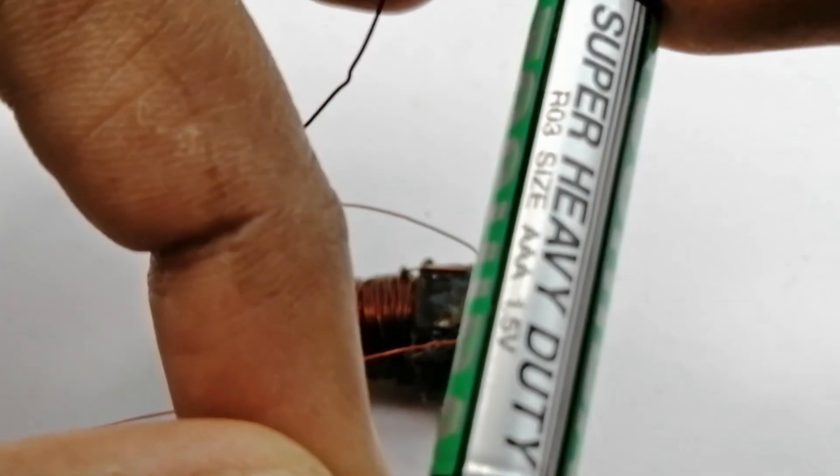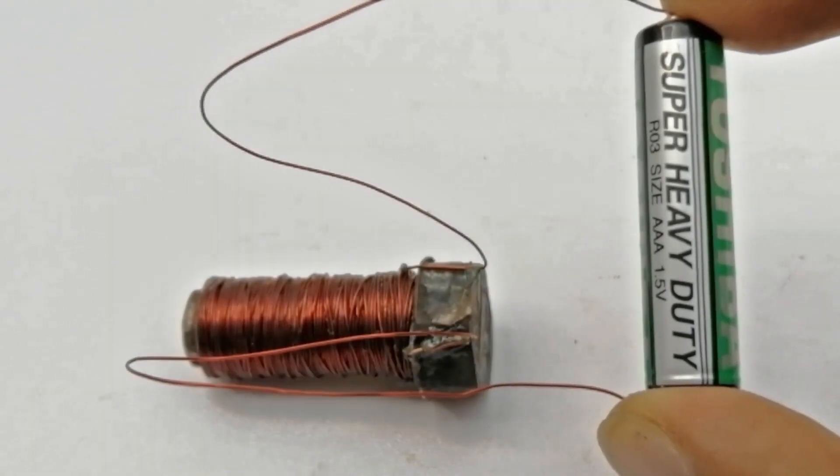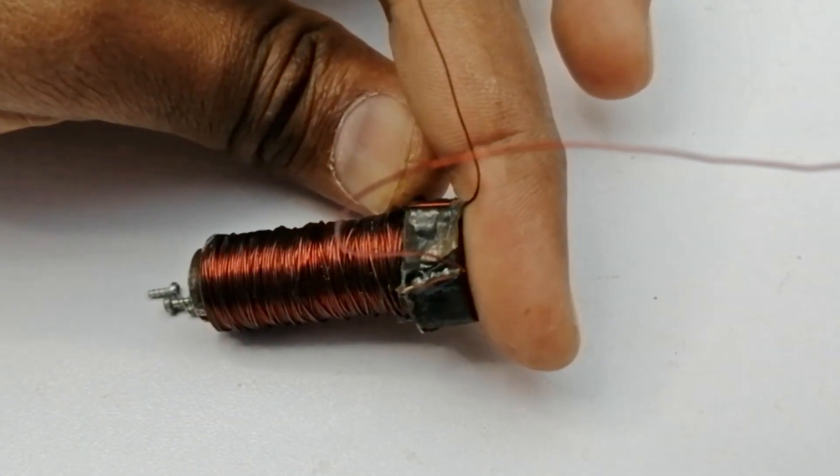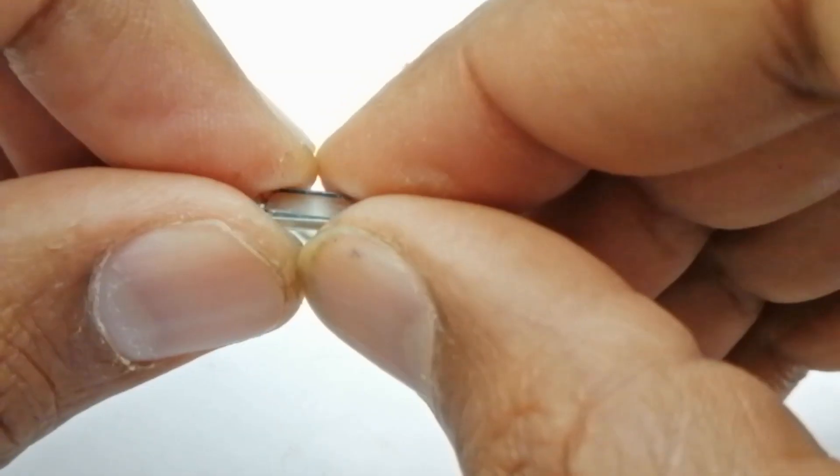Now we attach it to a battery cell and let's see if it's turned into a magnet now. Yes, now it is attracting the iron nails. It has turned into a magnet.